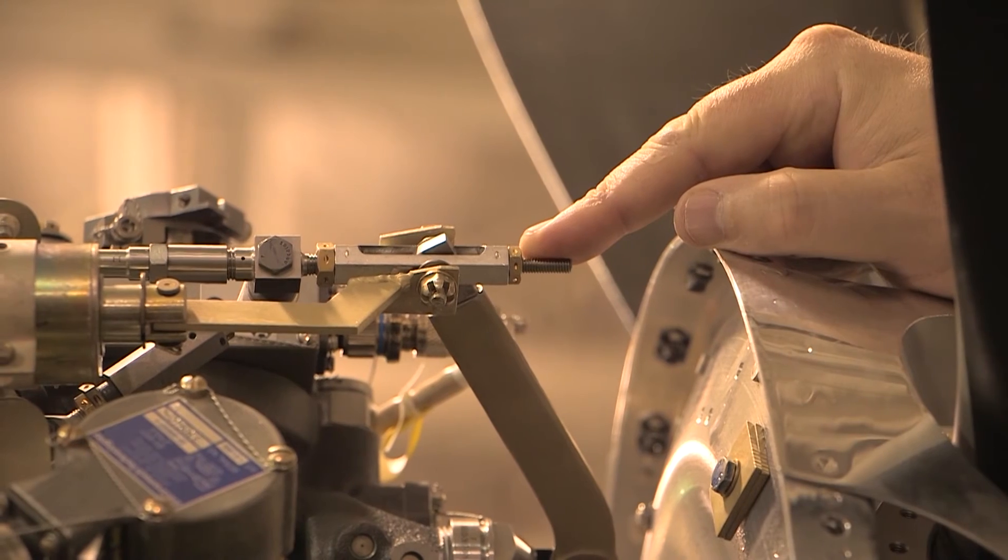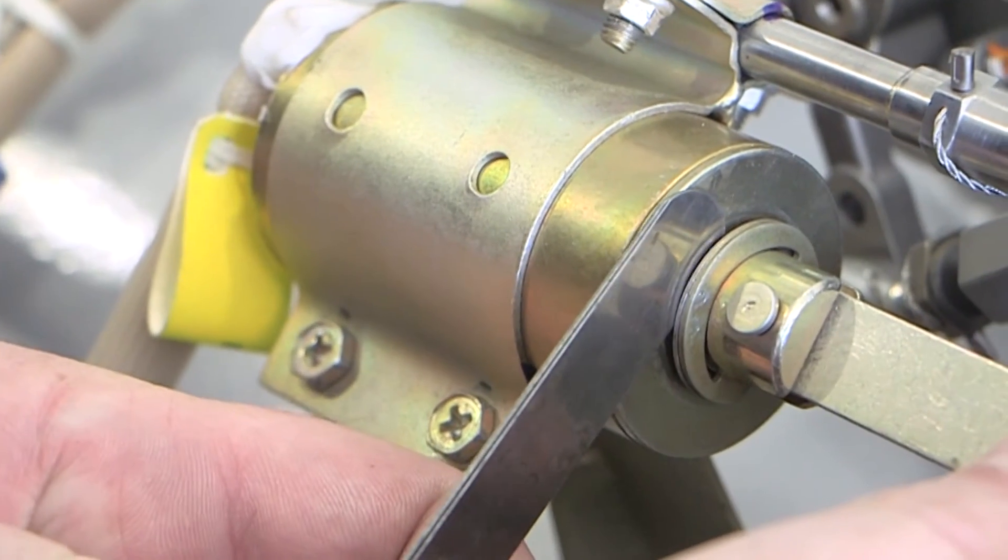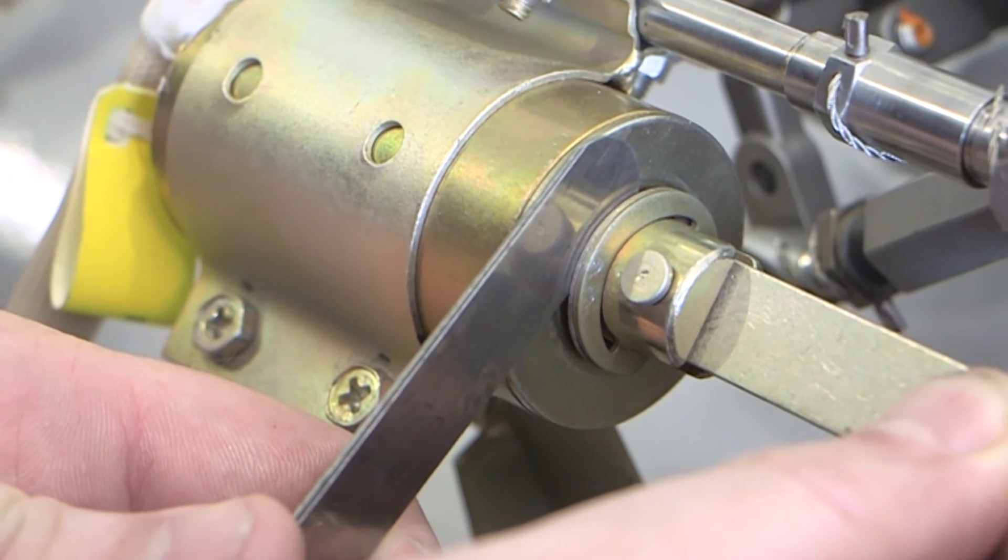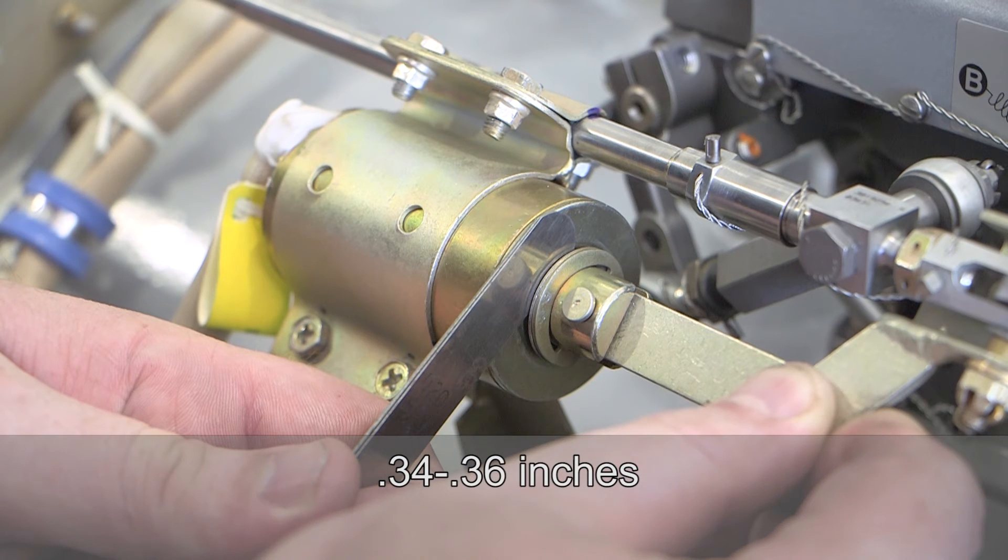With the beta arm in the full forward position, the notch firmly against the torque adjusting screw, set the solenoid pull in distance, the distance between the forward face of the solenoid and the aft face of the AN960 washer on the plunger, to 0.34 to 0.36 inches.